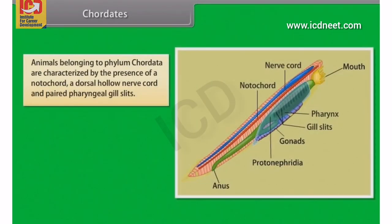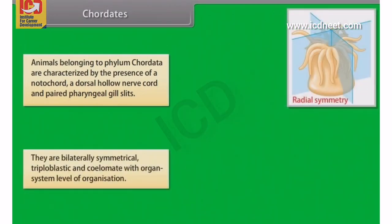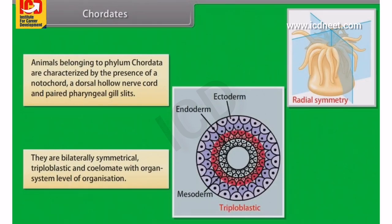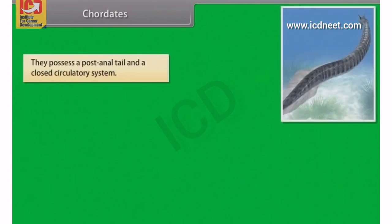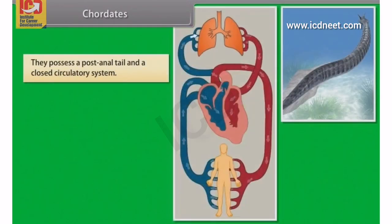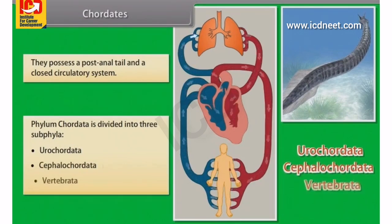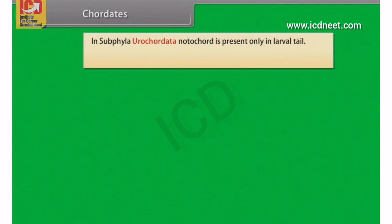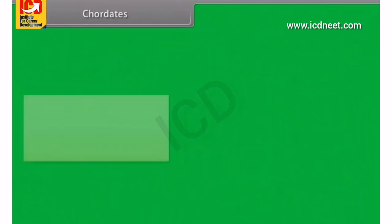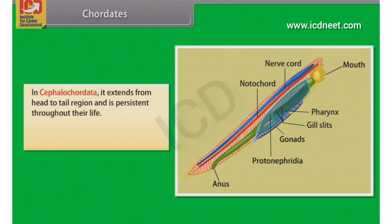Animals belonging to phylum chordata are characterized by the presence of notochord, a dorsal hollow nerve cord and paired pharyngeal gill slits. They are bilaterally symmetrical, triploblastic and coelomate with organ system level of organization. They possess a post-anal tail and a closed circulatory system. Phylum chordata is divided into three subphyla: urochordata, cephalochordata and vertebrata. In urochordata, notochord is present only in the larval tail. Example: Ascidia, Salpa, Doliolum. In cephalochordata, it extends from head to tail region and is persistent throughout their life. Example: Branchiostoma, Amphioxus and Lancelet.